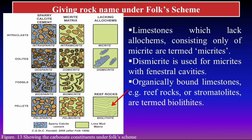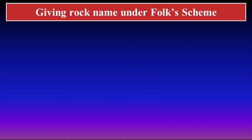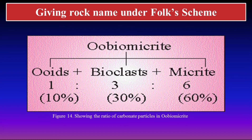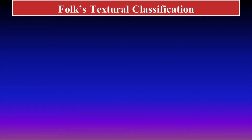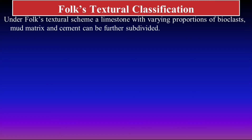Reef rocks are organically bound limestones. If a rock has two types of allochems with micrite or sparite, we give the name using a one-to-three ratio. For example, ooids and bioclasts with micrite gives 'oo-bio-micrite', with a ratio of 10:30:60. Similarly for sparite, a rock with pellets and bioclasts in sparite cement is called a 'pell-bio-sparite'. We then move on to the textural classification.